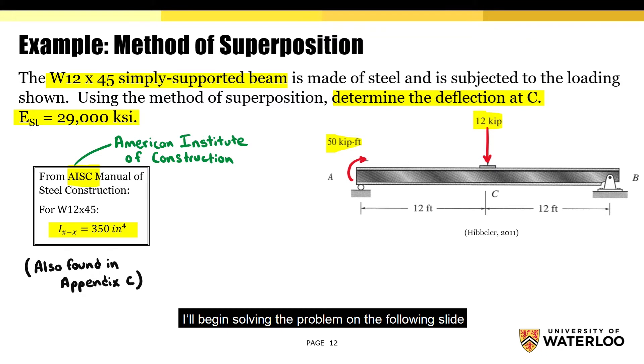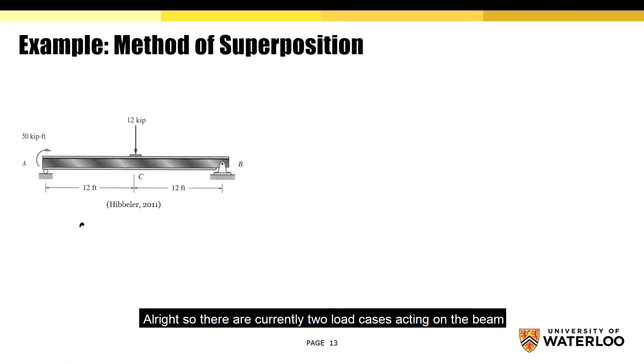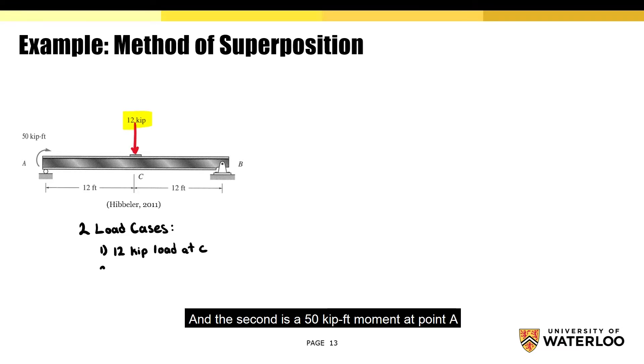Alright, so there are currently two loads acting on the beam. The first is a 12 kip point load at point C, and the second is a 50 kip feet moment at point A.